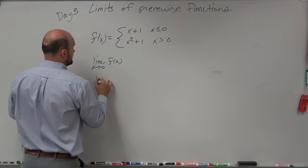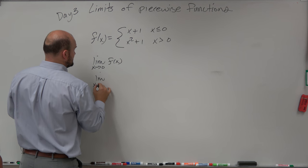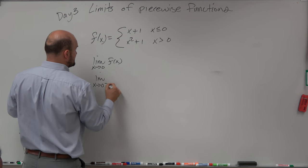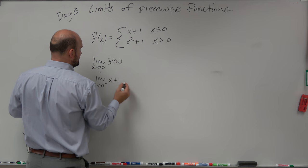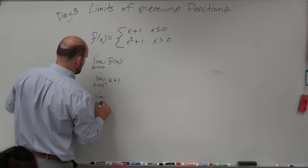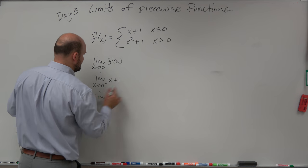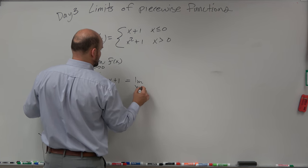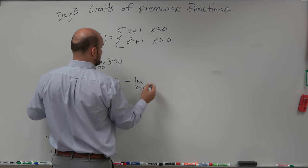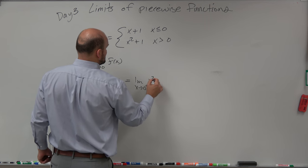So if we're going to say the limit as x approaches 0 from the left is going to be of x plus 1, and the limit as x approaches 0, that has to equal the limit as x approaches 0 from the right, which is going to be x squared plus 1.